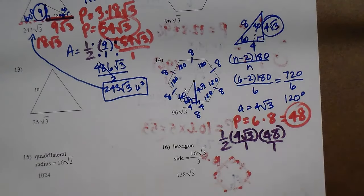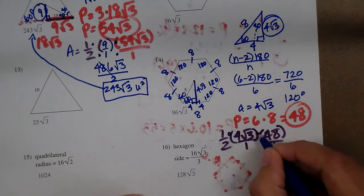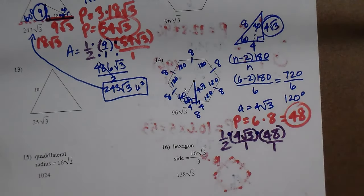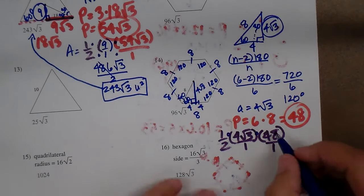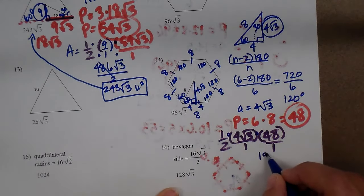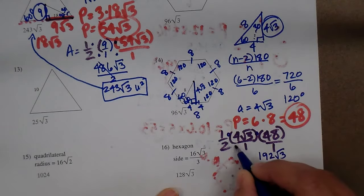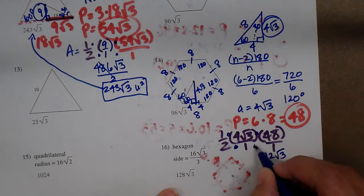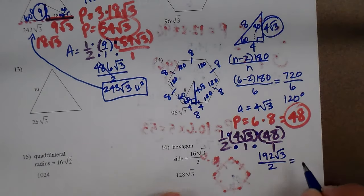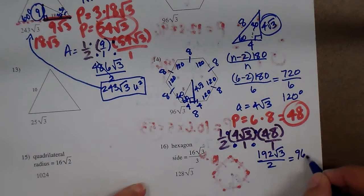I'm going to multiply this across. 4 times 48 is 192 times the square root of 3 on top. I have 2 on the bottom. 192 divided by 2 is 96 square roots of 3 units squared.